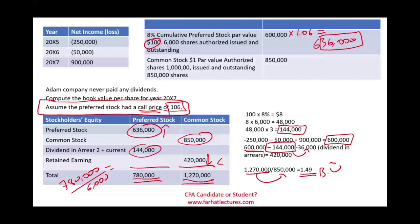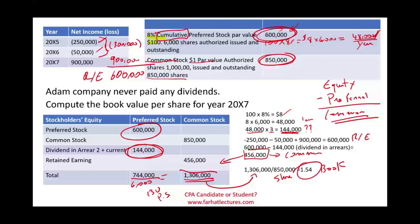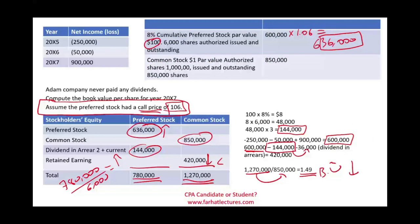So the book value of preferred stock went up while the book value of common stock went down — from $1.54 to $1.49. That is how you compute the book value per share. There could be other scenarios, so make sure you are comfortable with the basics. Go to FarhatLectures for additional resources: MCQs, true-false, and practice problems. Computing the book value per share is an important topic on the CPA exam. Good luck, study hard, and stay safe.